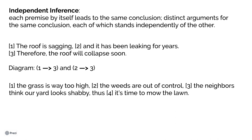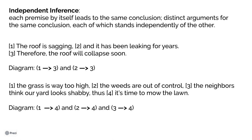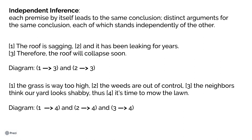Here's another example of independent inference: 'The grass is way too high. The weeds are out of control. The neighbors think our yard looks shabby. Thus, it's time to mow the lawn.' If the weeds are out of control, you may conclude it's time to mow. If the grass is too high, you may think it's time to mow. And if your neighbors keep complaining, that might in and of itself be reason to conclude you should mow. Each of the three lines of evidence individually may point to the conclusion. The diagram would read: one leads to four, two leads to four, and three leads to four.